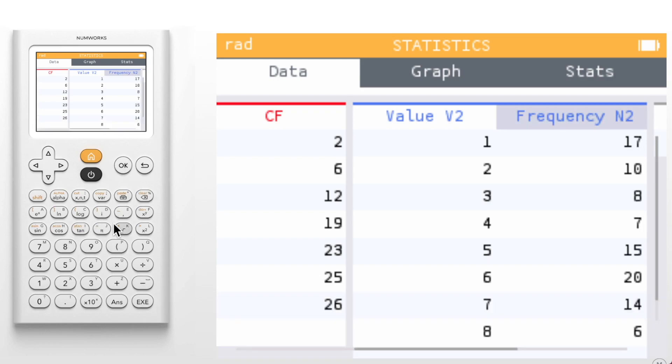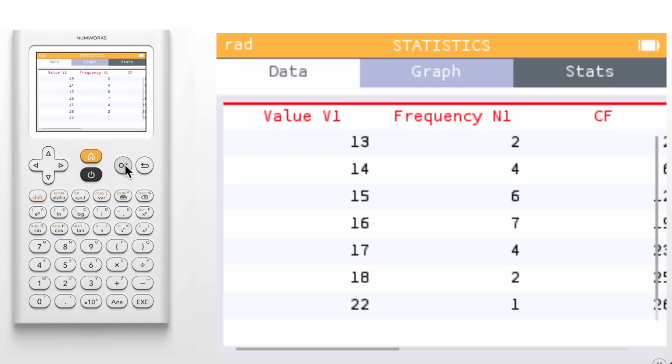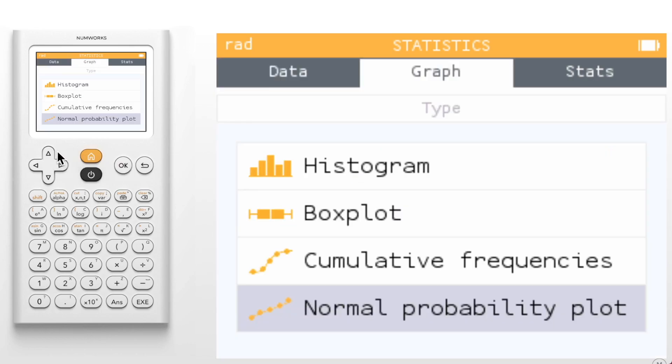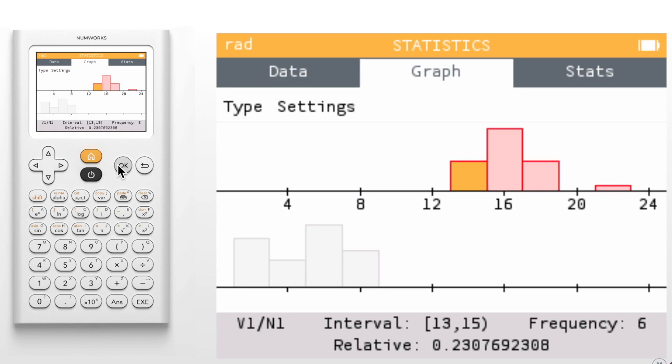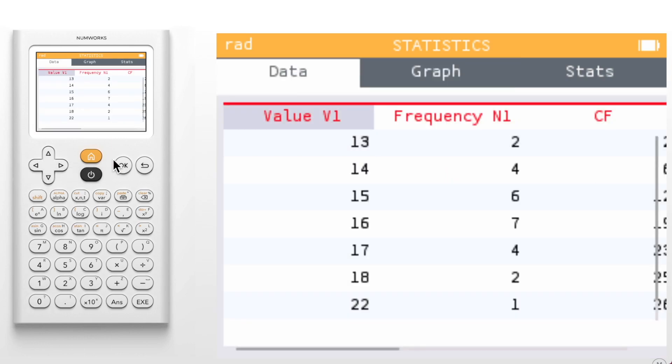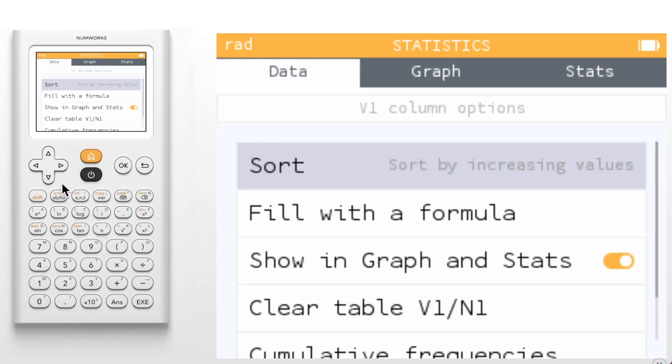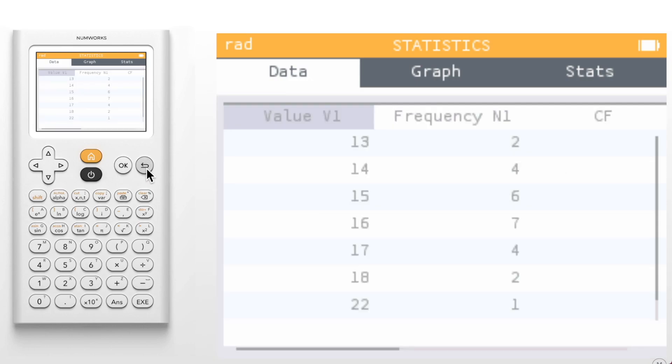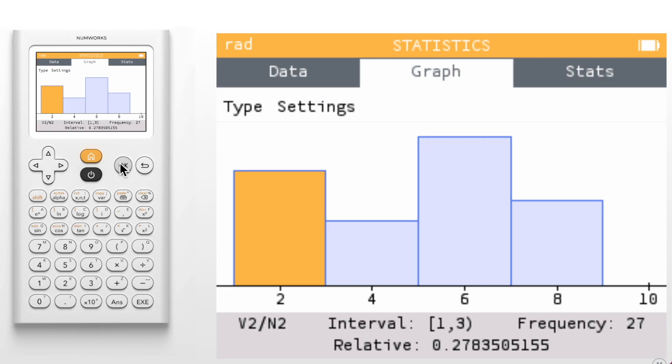As before, when we return to the graph, we'll see distributions for both data sets. However, it is now possible to hide a data set in the graphs tab. Let's hide our first data table by going back to the data tab and opening the column options for the first data table. We will now toggle off the show in graph and stats option. Notice this table is now grayed out. If we return to the graph tab, we'll see that only one data set is represented.